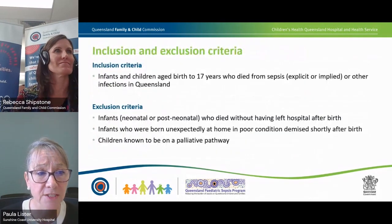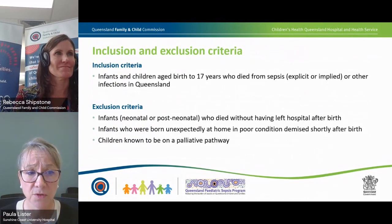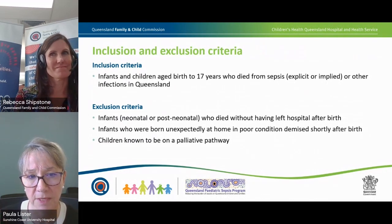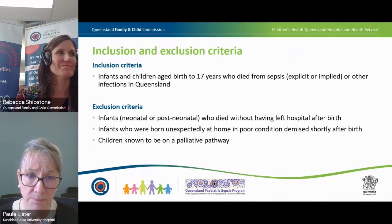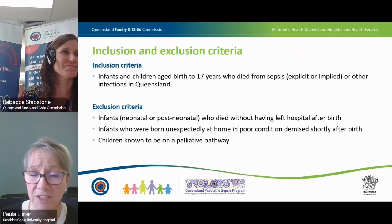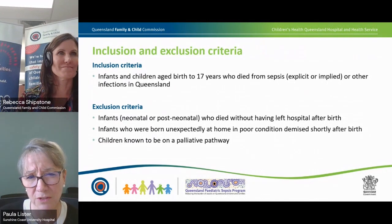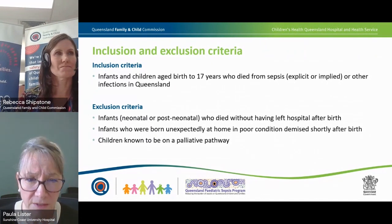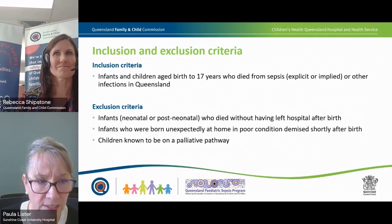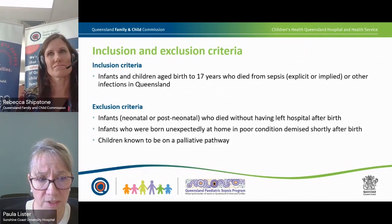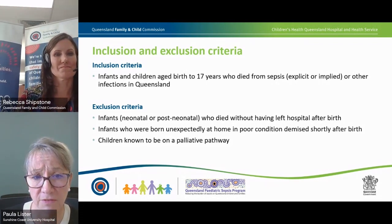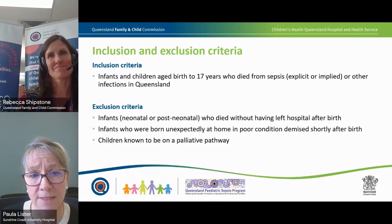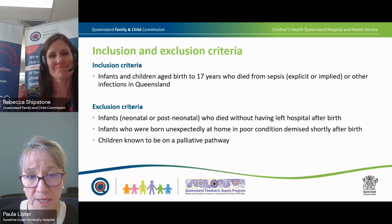We are looking at all children from birth to 17 years who died from sepsis, using explicit sepsis codes or implicit codes where infection plus organ dysfunction are included. We are pragmatically excluding some cohorts: infants who never leave hospital after birth — often pretermers or children with congenital anomalies; those born unexpectedly at home in poor condition; and children known to be on an end-of-life palliative pathway, because sepsis is often the terminal event for these patients and would not necessarily be treated in the same way.